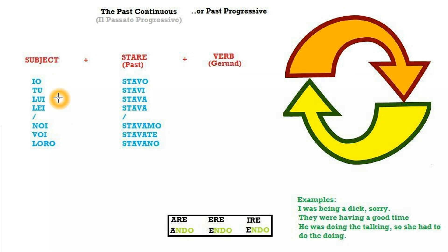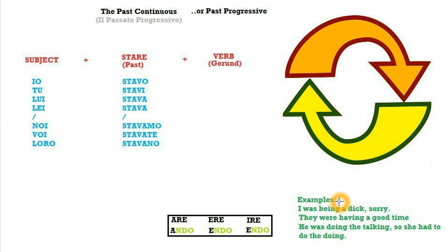Io, tu, lui, lei, noi, voi, loro. We said in the present continuous video that we do not use the verb to be in Italian. So in English you have your subject, the verb to be, and then your verb, but in Italian you use the verb to stay, or stare, and then the gerund of the verb you need in the past continuous.